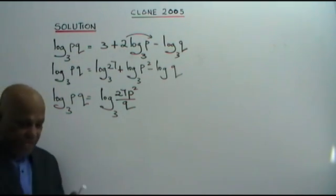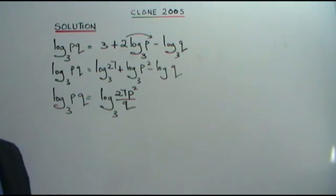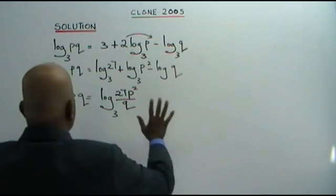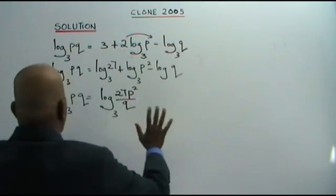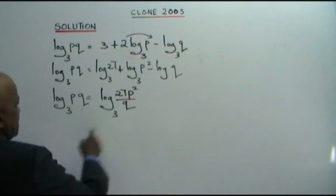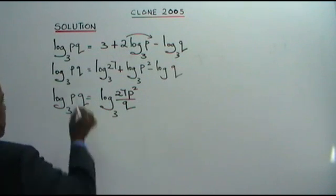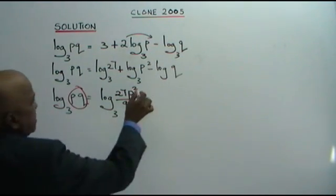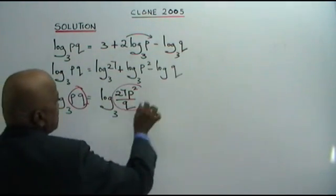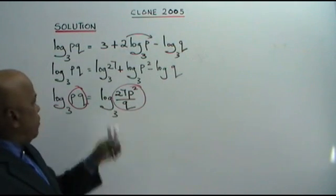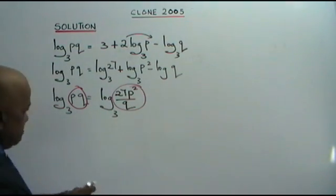Now, if you compare both sides — base 3 equals base 3 — therefore PQ is equal to 27P squared over Q.